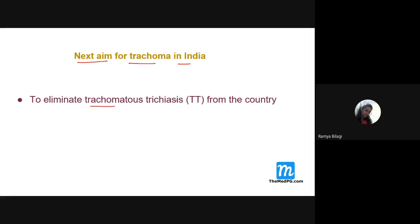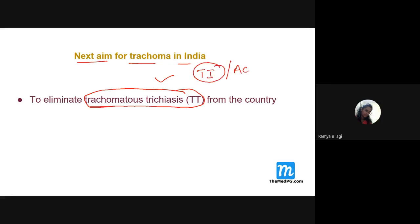India's aim was to eliminate infectious (active) trachoma, which has already been achieved and declared in 2017.